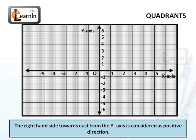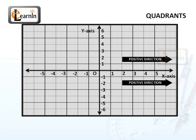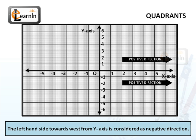The right-hand side towards the east from the y-axis is considered the positive direction. The left-hand side towards the west from the y-axis is considered as the negative direction.